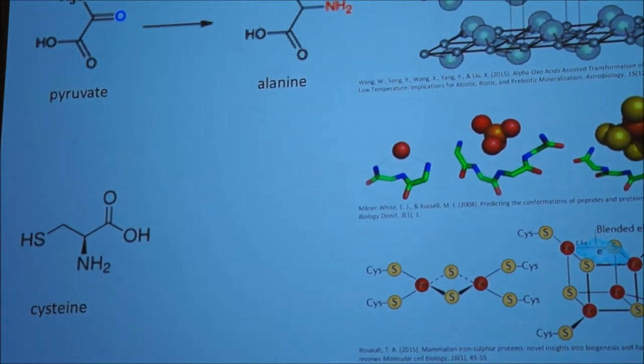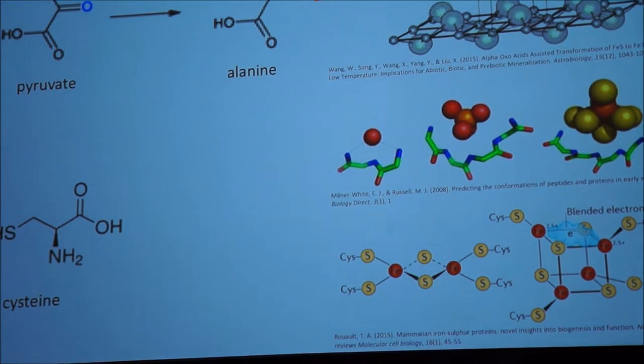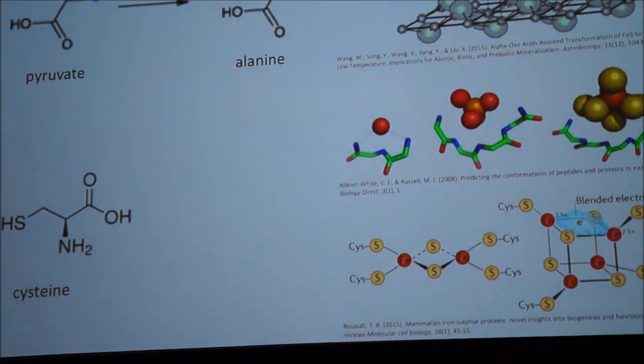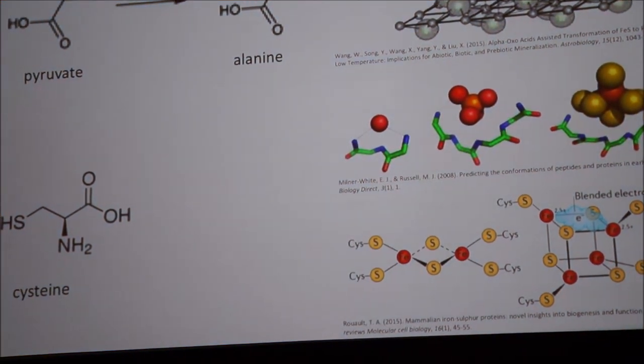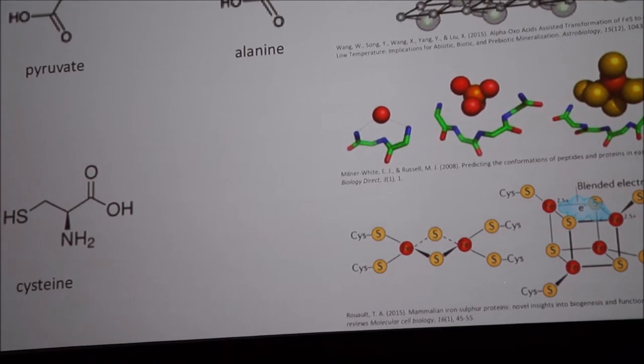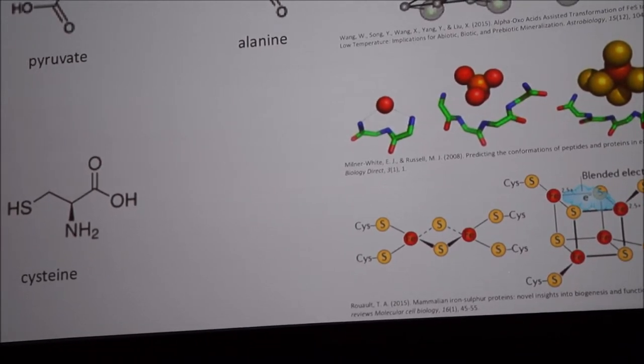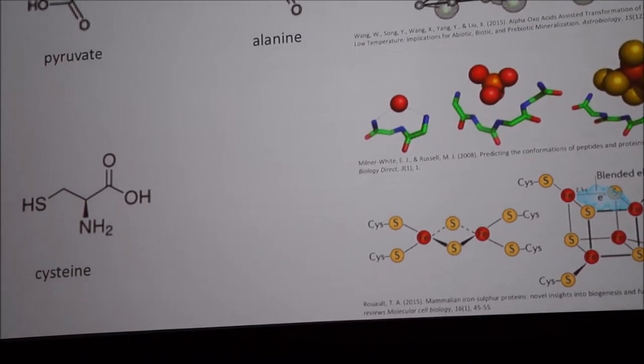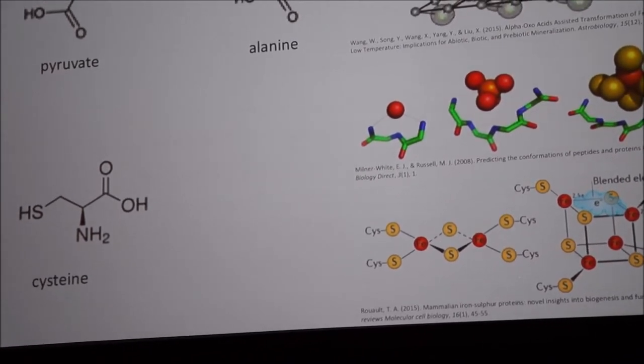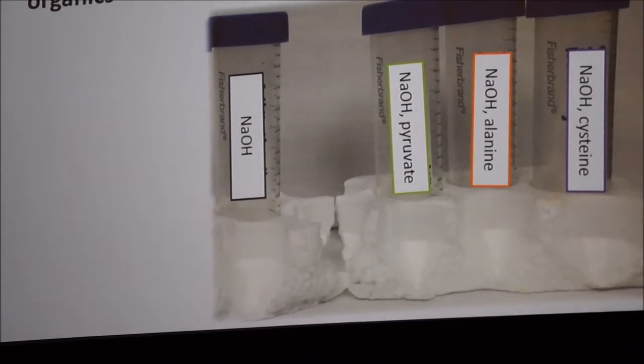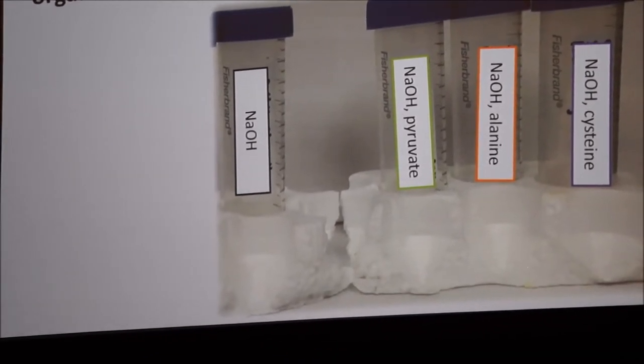We also did experiments where we doped our chimneys with organics, which is important because there's been a lot of work done showing that organics can coordinate to fragments within the chimney and then assist in catalysis. We focused on pyruvate, alanine, and cysteine because they were interesting.